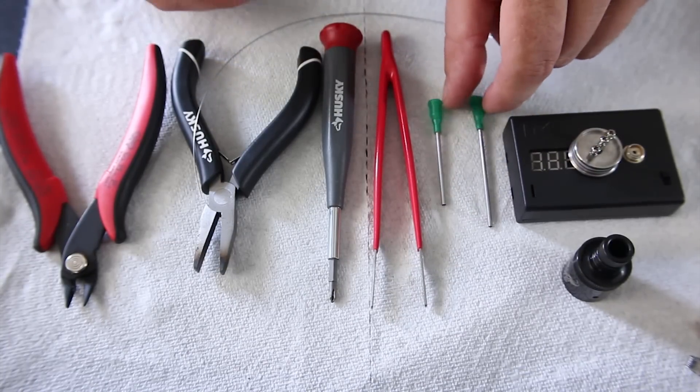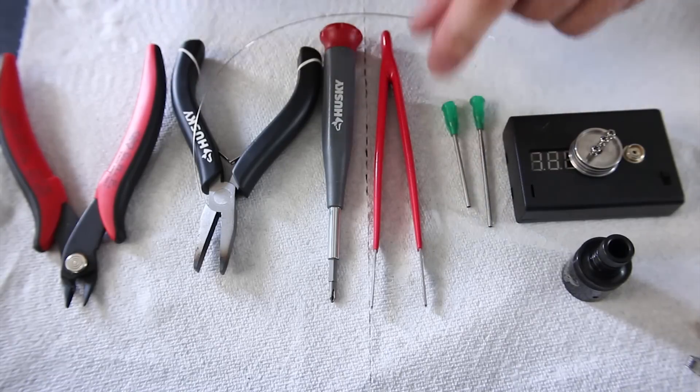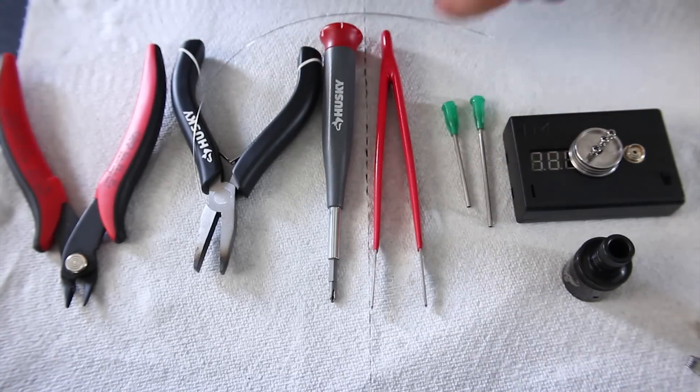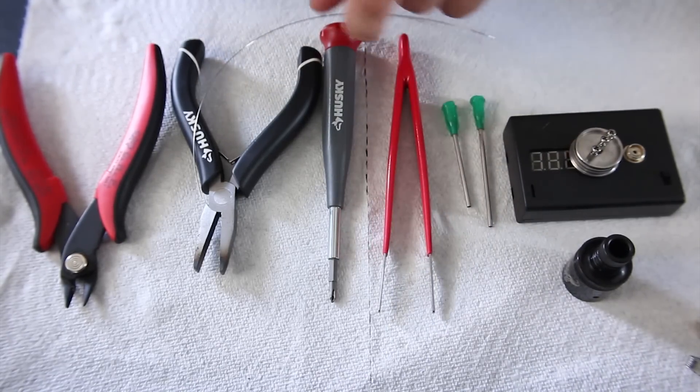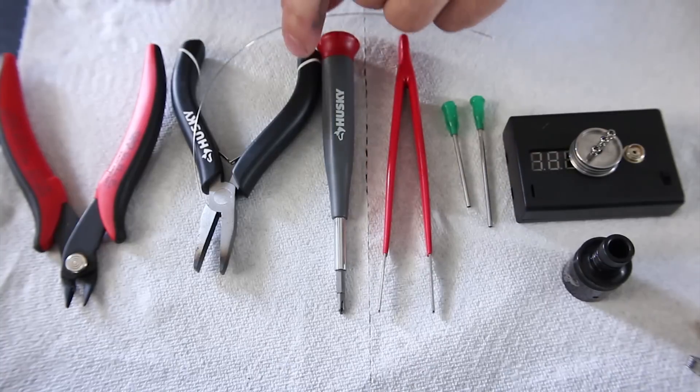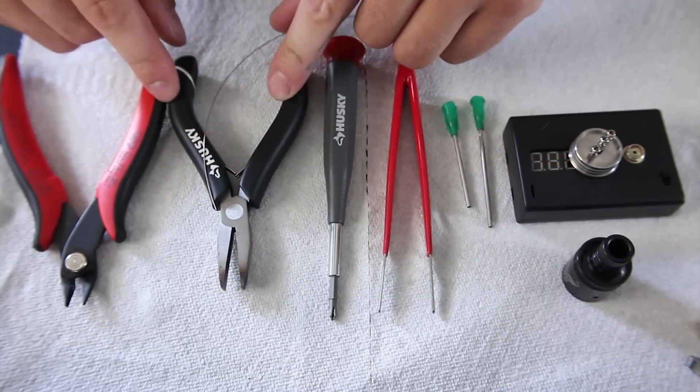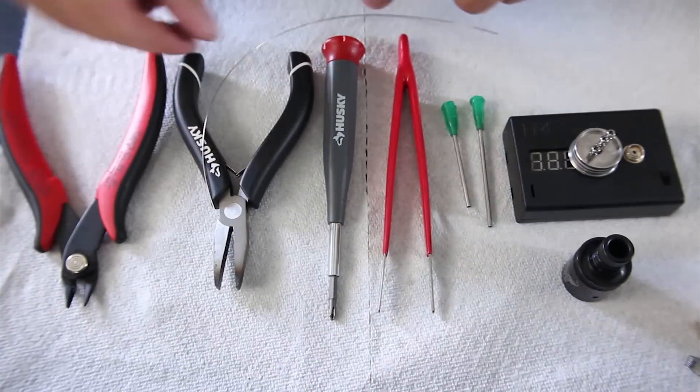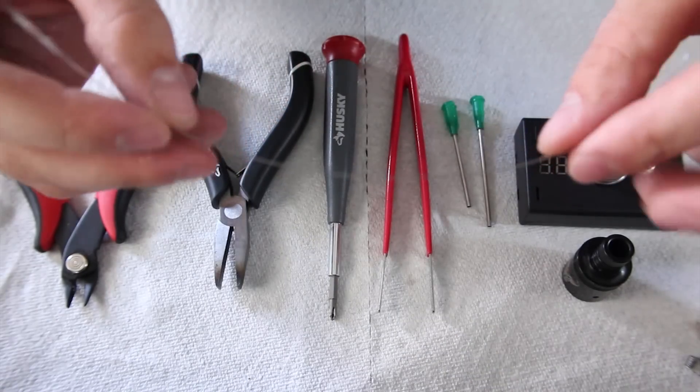We have two 14-gauge syringe needles. Now you don't need two, but I find that it does help when wrapping your second coil to keep that first coil nice and tight.